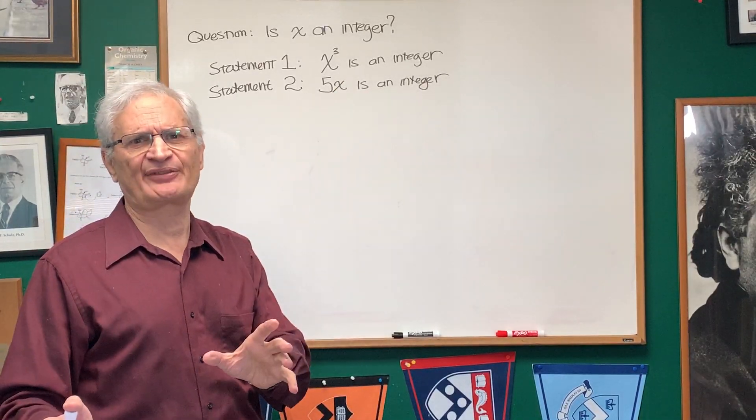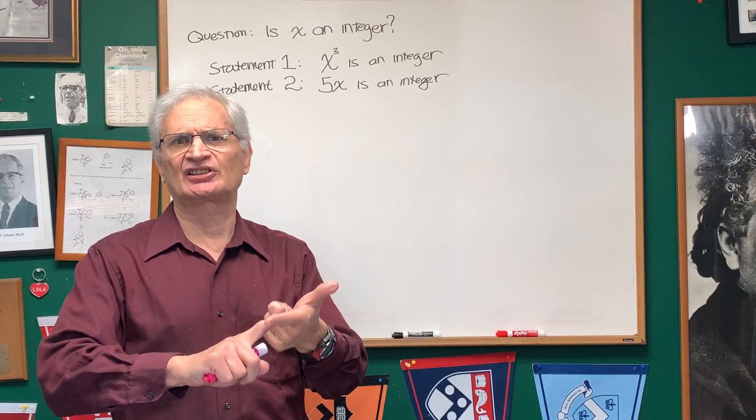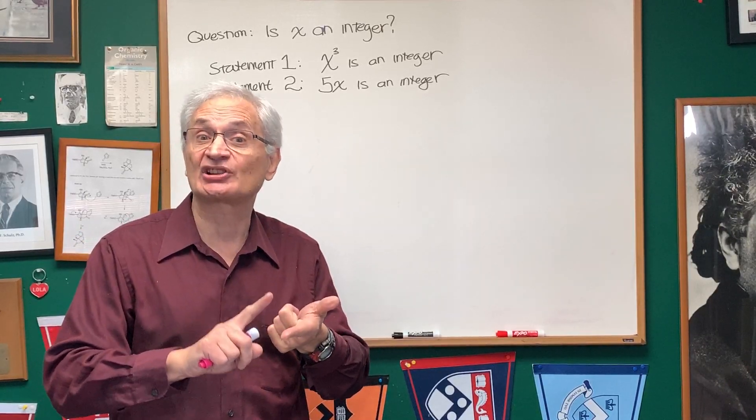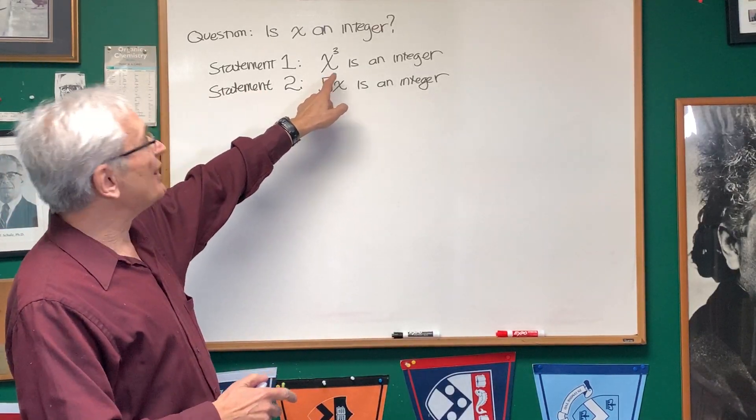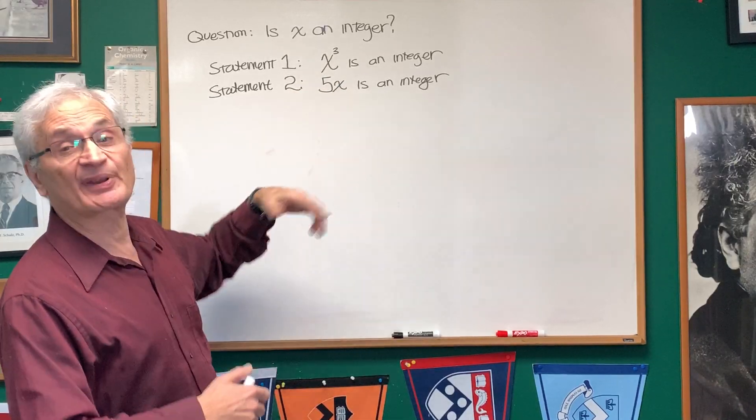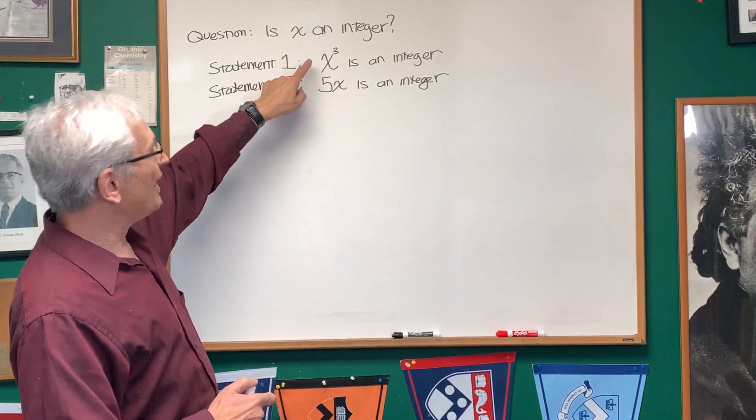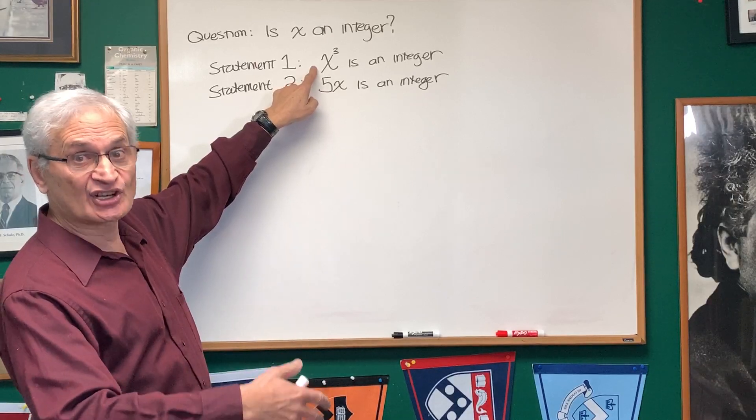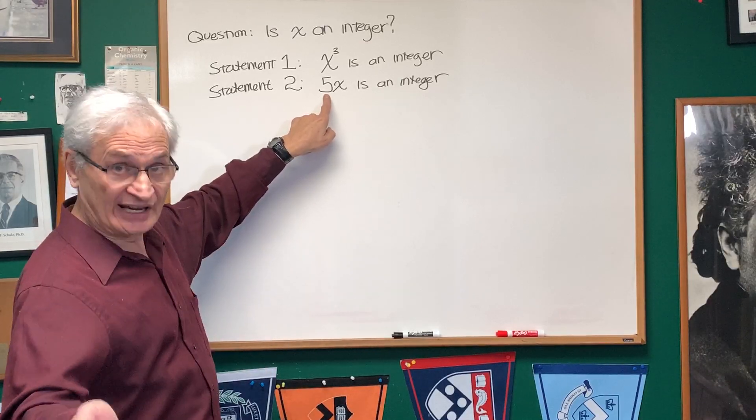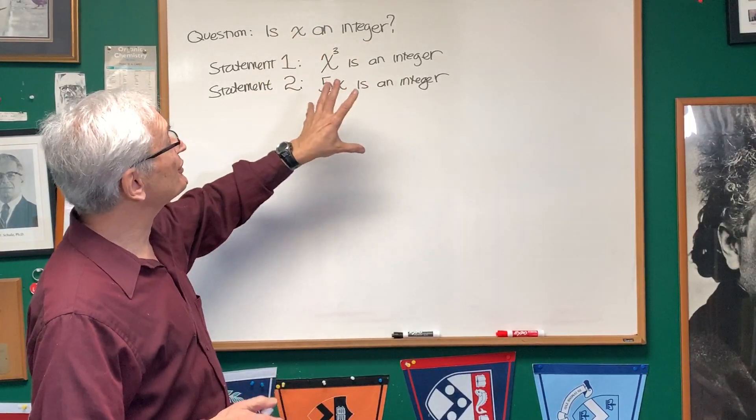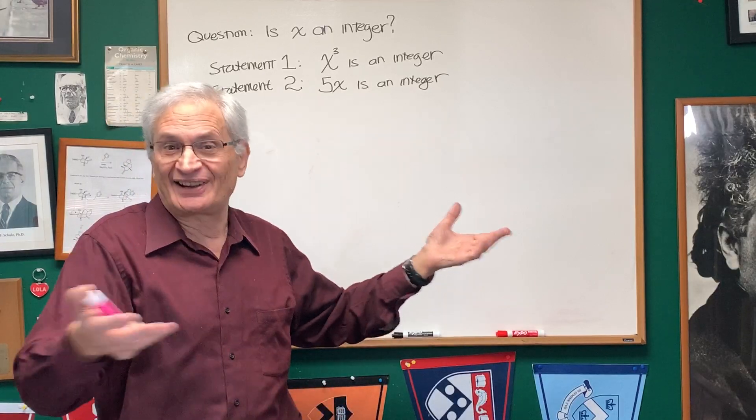If both of these are applied to the same set of values x, it tells us that x cannot be an irrational number. It rules that possibility out. Statement one describes integers and irrational numbers. 5x says no, x has to be a rational number—an integer is included. The intersection between those two sets is that x is an integer, and that's the solution. I didn't write a thing on the board, but that's the explanation.